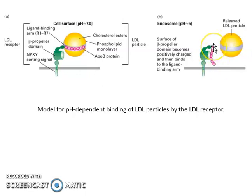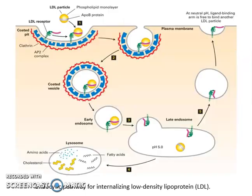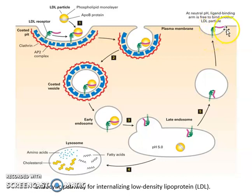The ligand-binding arm has negatively charged residues, so it tightly binds to the now-positively-charged beta-propeller domain due to opposite charges. This causes the LDL particle to be released. When the LDL receptor returns to the cell surface at neutral pH, it becomes deprotonated, and the ligand-binding arm is free to attach another LDL particle.